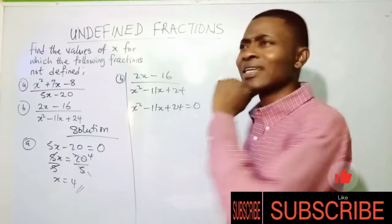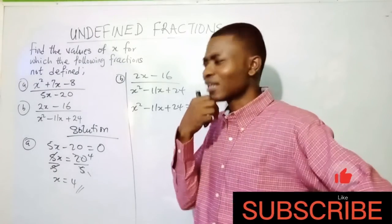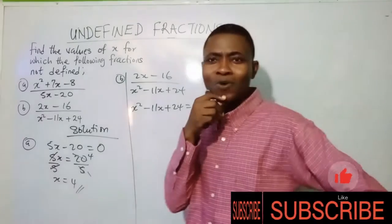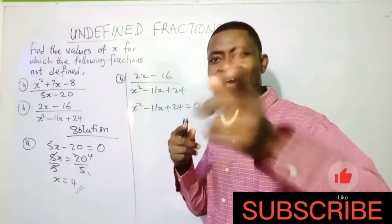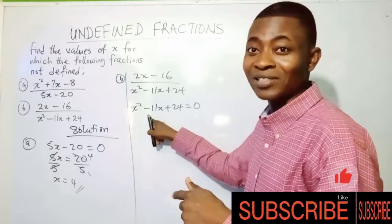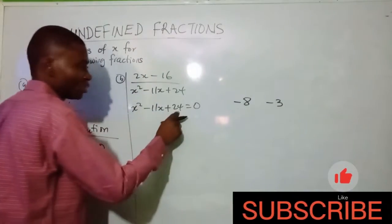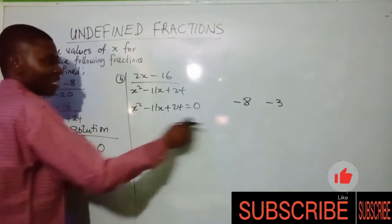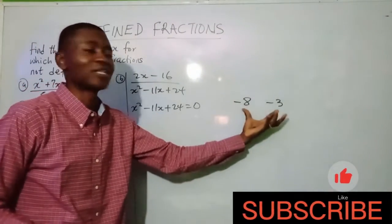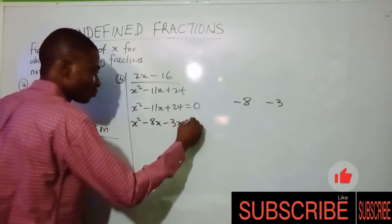Let's look at the factors of 24. Is it 12 and 2? No. Six and four? Six times four is 24, but that doesn't work either. What about eight and three? Eight times three is 24, and eight plus three gives 11. Since I need minus 11, I'll use minus eight and minus three — minus times minus gives plus, so minus 8 times minus 3 is 24, and minus 8 plus minus 3 is minus 11. So the factors are minus 8 and minus 3.